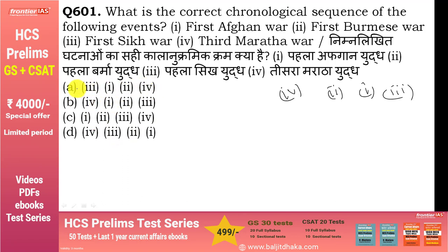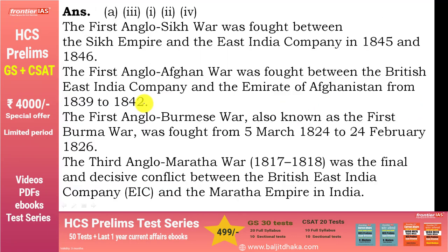यह Reverse Chronological Order में दे रखा है। जो सबसे बाद में हुआ उसको पहले दे रखा है और जो सबसे पहले हुआ वो बाद में है। Anglo-Burmese War 1824-1826 के बीच हुआ था। Third Anglo-Maratha War 1817-1818 के बीच हुआ था। First Afghan War 1839-1842 के बीच था।